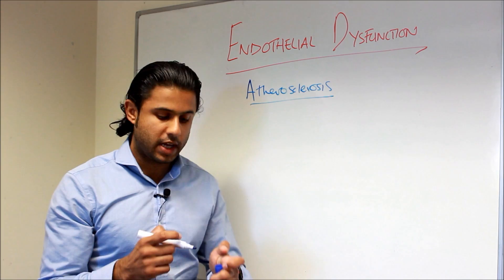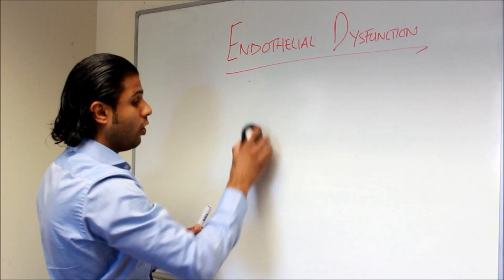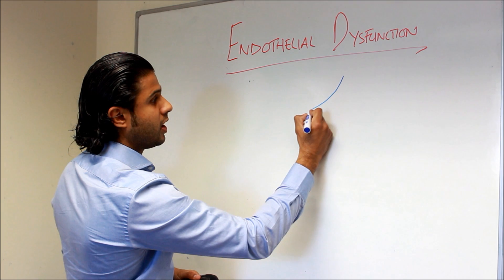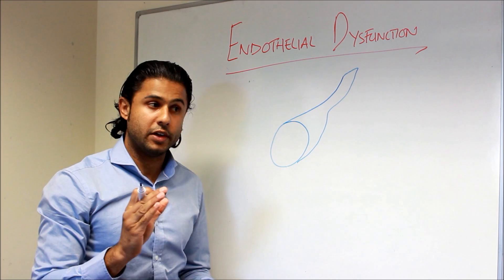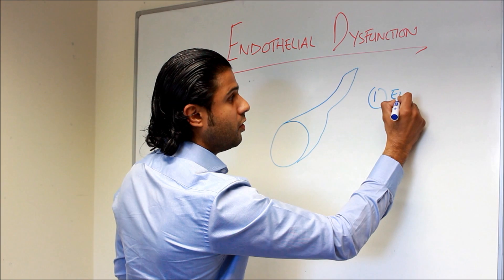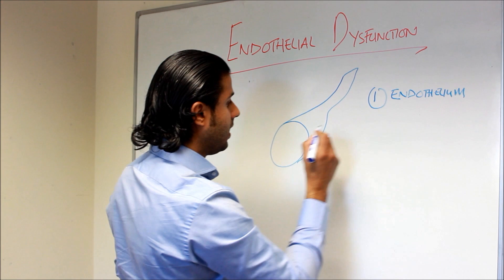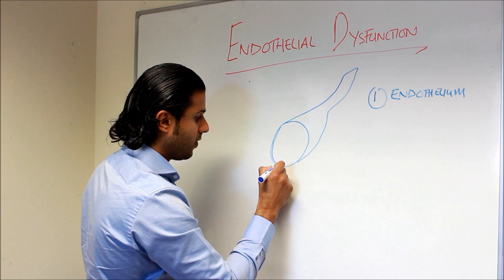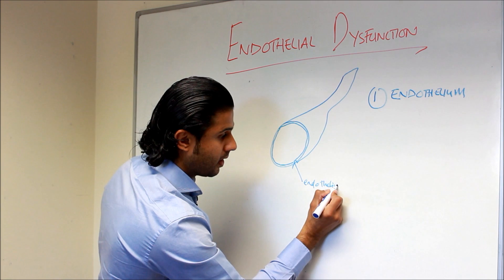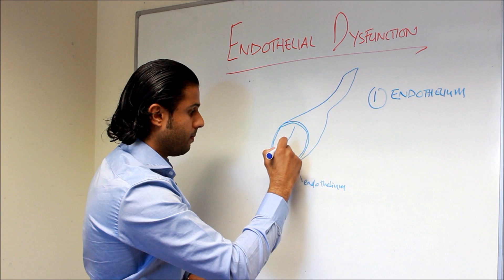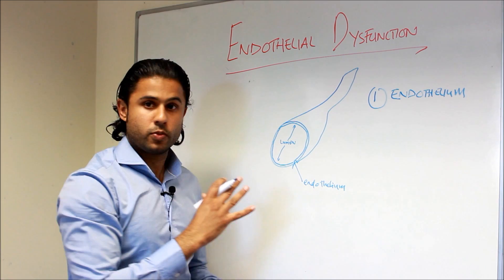Let's start by having a look at a blood vessel. I'll draw a blood vessel cross-sectionally here. So we've got a cross-sectional area of the blood vessel, and we can see it's made up of three layers. The first layer is the innermost layer known as the endothelium. The endothelium is on the inside of the blood vessel and is in contact with the blood. This central part is the lumen of the blood vessel, which is where all of the blood actually flows.